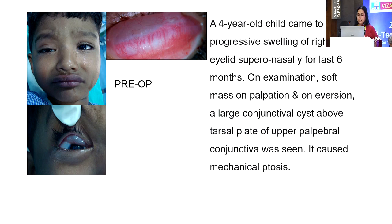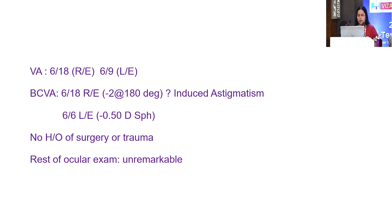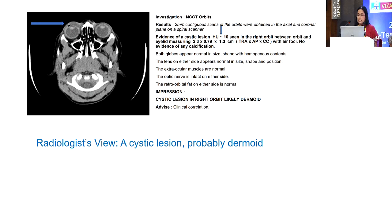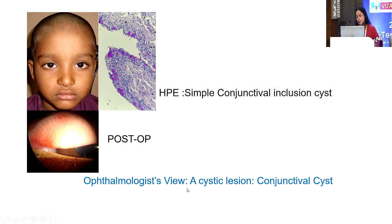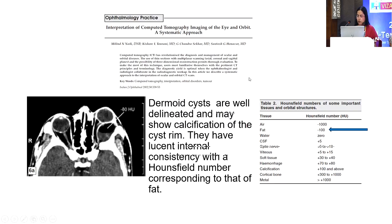Case scenario three: a four-year-old child came with progressive swelling of the right upper eyelid supero-nasally for six months. On examination it was a cystic lesion but we couldn't see the posterior margin, so before taking the patient to the OR we asked for a CT scan. The Hounsfield number for this cystic lesion was around 10, and the radiologist said it was probably a dermoid cyst.